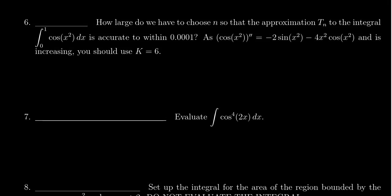In this video, we're going to take a look at the solution to question 6 from the practice midterm exam for Calculus 2, Math 1220. We're asked how large do we have to choose n so that the approximation using the trapezoidal rule Tₙ to the integral from 0 to 1 of cos(x²)dx is accurate to within 0.0001.